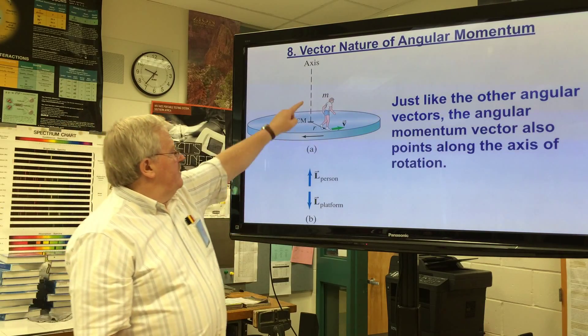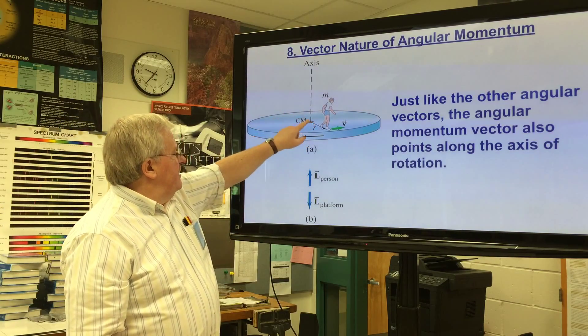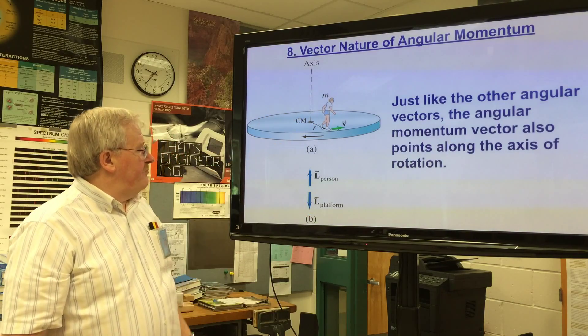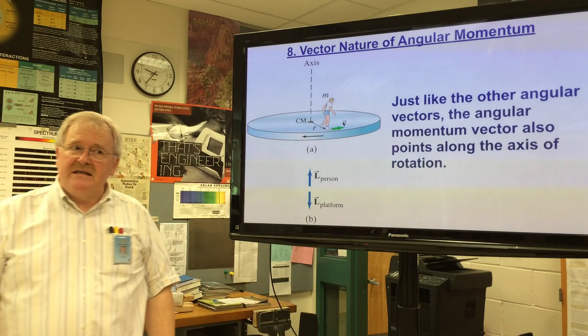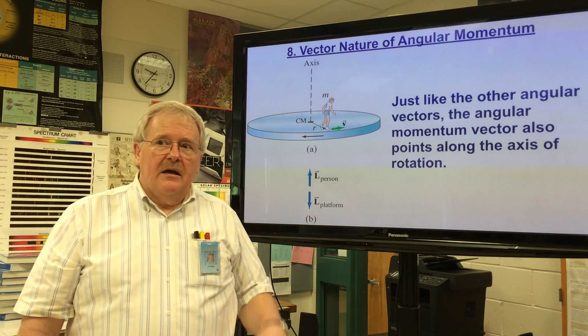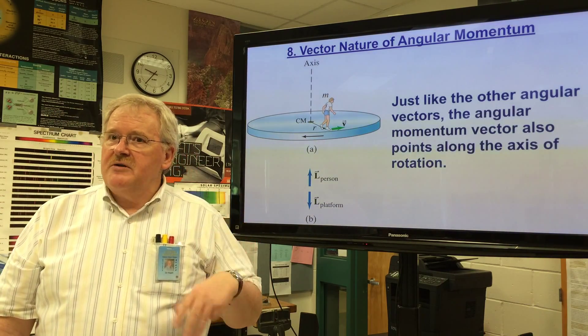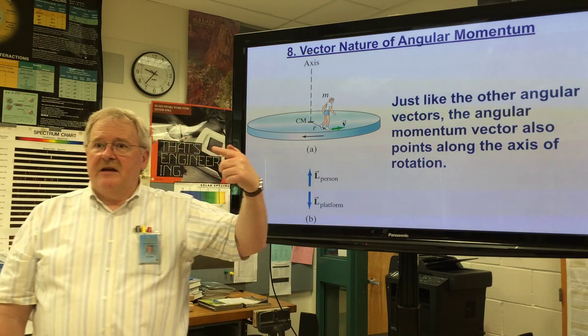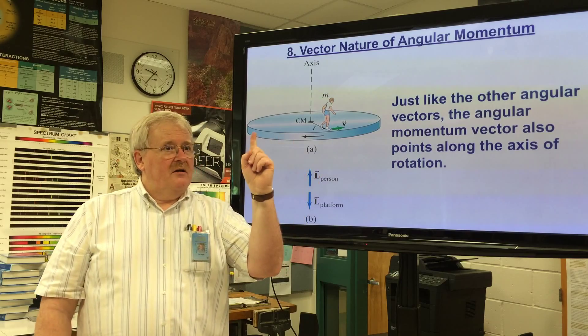So just like the other angular vectors, the angular momentum vector also points along the axis of rotation. In this case, the angular momentum of the person is up, angular momentum of the platform is down.